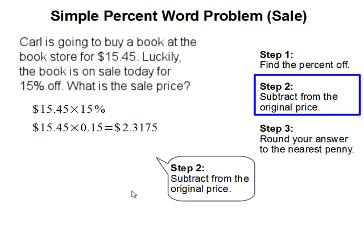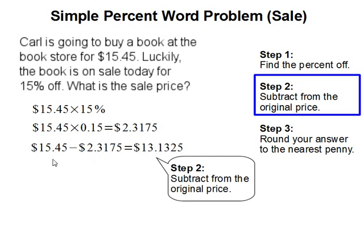Step 2: Subtract from the original price. We are going to take this sale amount and subtract that from the original price. 15.45 minus 2.3175 gets us 13.1325.